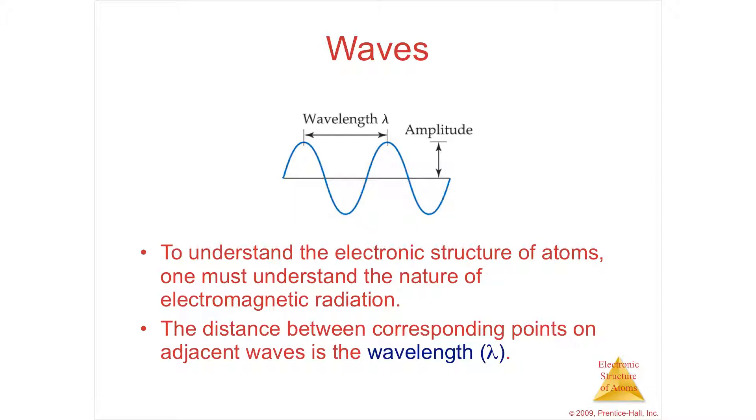So any electromagnetic radiation, so radio waves or x-rays or microwaves or heat or light, all of these different forms of radiation is characterized by its nature as a wave. And so a wave is kind of a repeating oscillation. It's a back and forth movement.